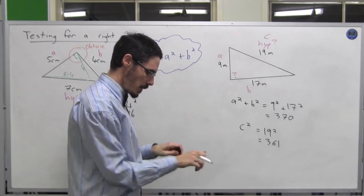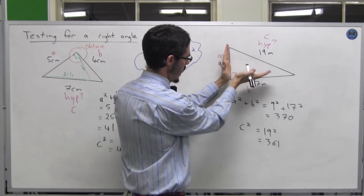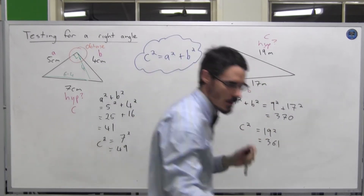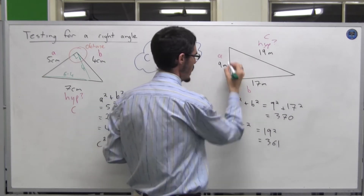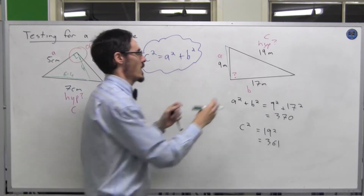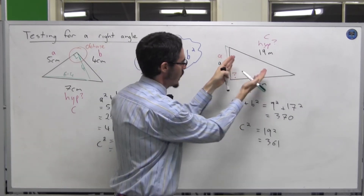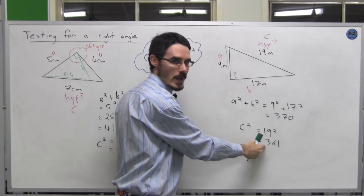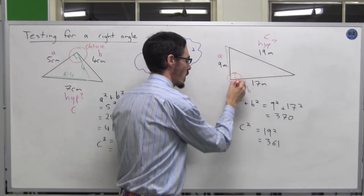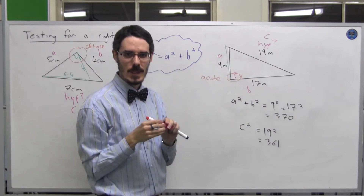So this time, if I have a right angle triangle with 9 and 17 in it, I'm actually going to get something a little bit bigger than my 19. If this was a right angle, the side would actually be a little bit longer. The triangle I'm looking at — my original one — this angle is actually smaller because this length isn't quite long enough. Which means this angle, in my original triangle, was less than 90 degrees. It's acute.